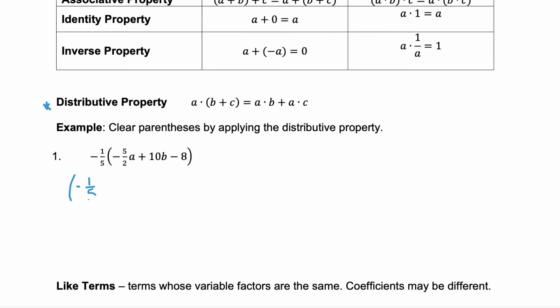We'll have negative 1/5 times negative 5/2 a plus negative 1/5 times 10b. Now remember this minus 8 for our third term is the same as adding the opposite. So we're going to do plus that negative 1/5 times negative 8. Looking at the first two terms we're multiplying a negative times a negative. So we'll end up with a positive. And we notice we have a 5 in the denominator and in the numerator. So this will simplify to a positive 1/2 and we have our variable a.